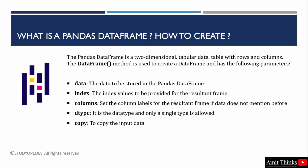The data frame in pandas is a two-dimensional tabular data that is like a table with rows and columns. To create a data frame we use the data frame method that includes the following parameters: data, which is what you want to store in it; how to label it with indexes; how to set column labels; if you want to add a specific data type, use the dtype parameter; and if you want to copy the data, use the copy parameter.